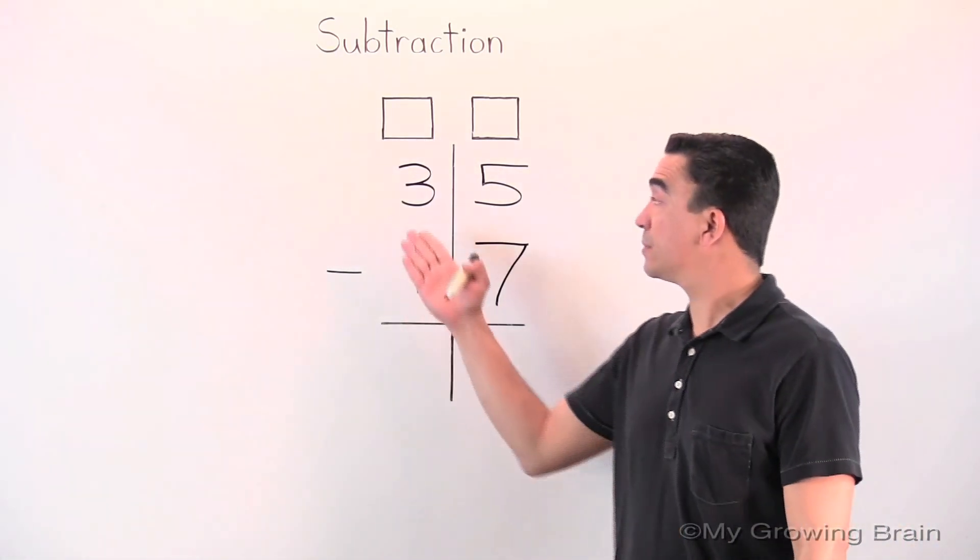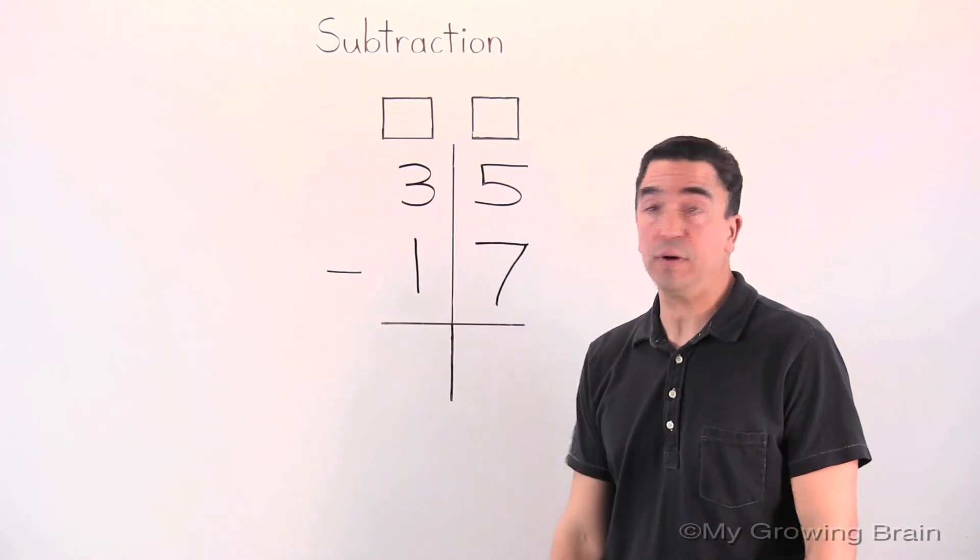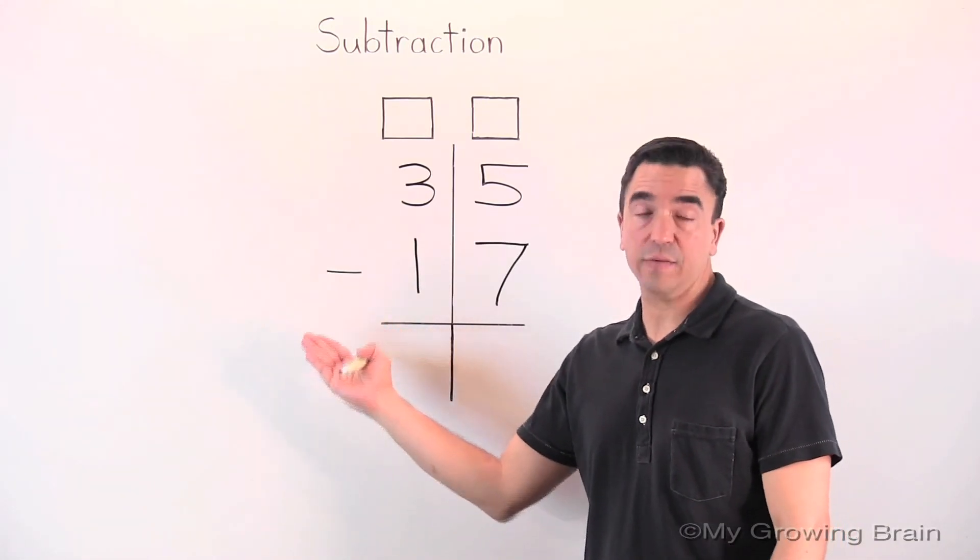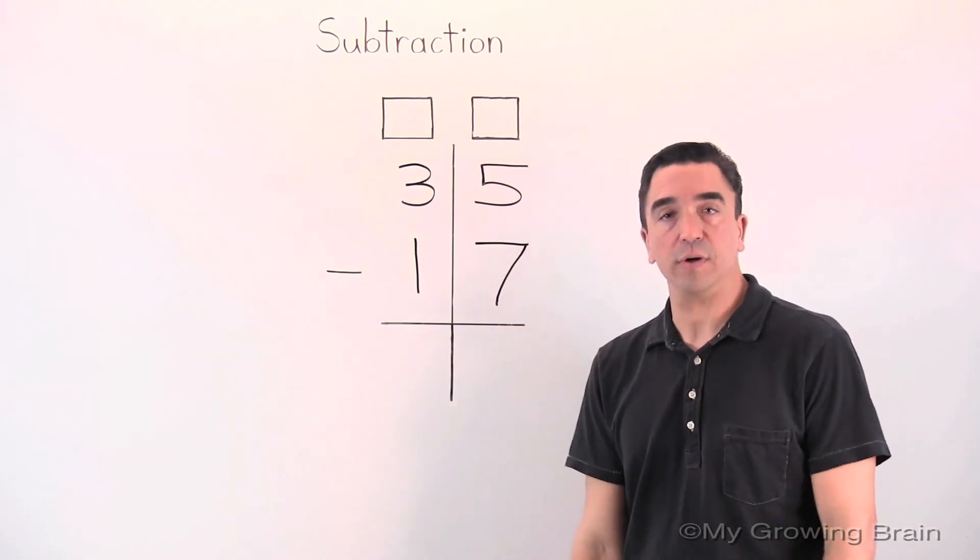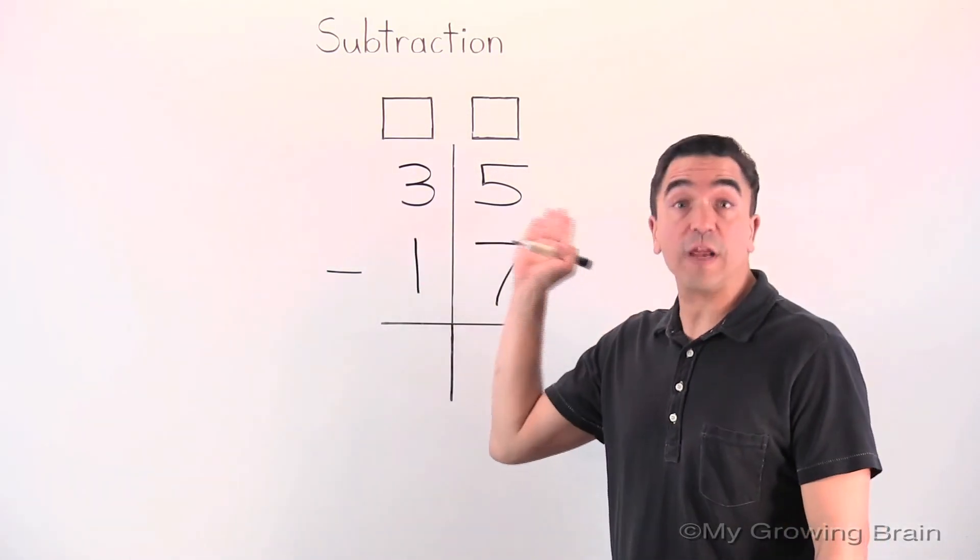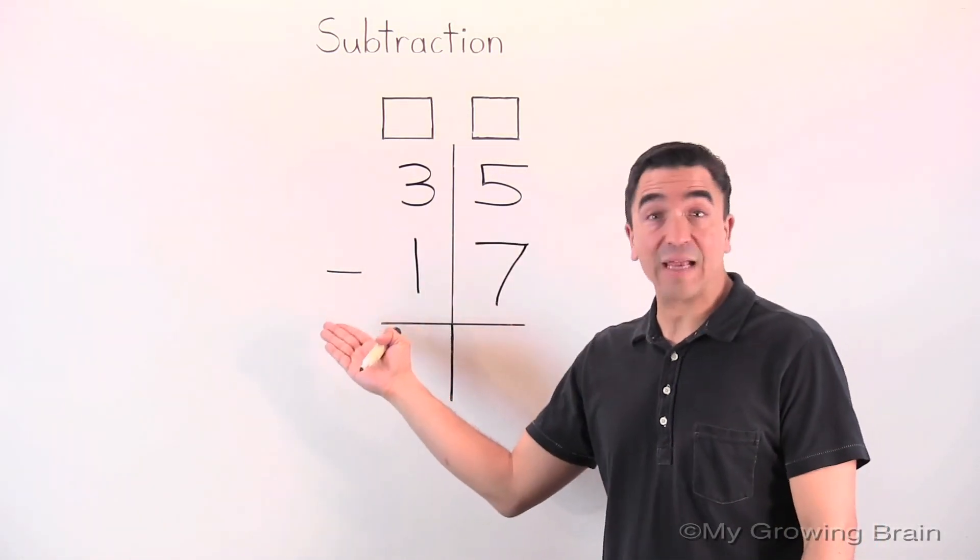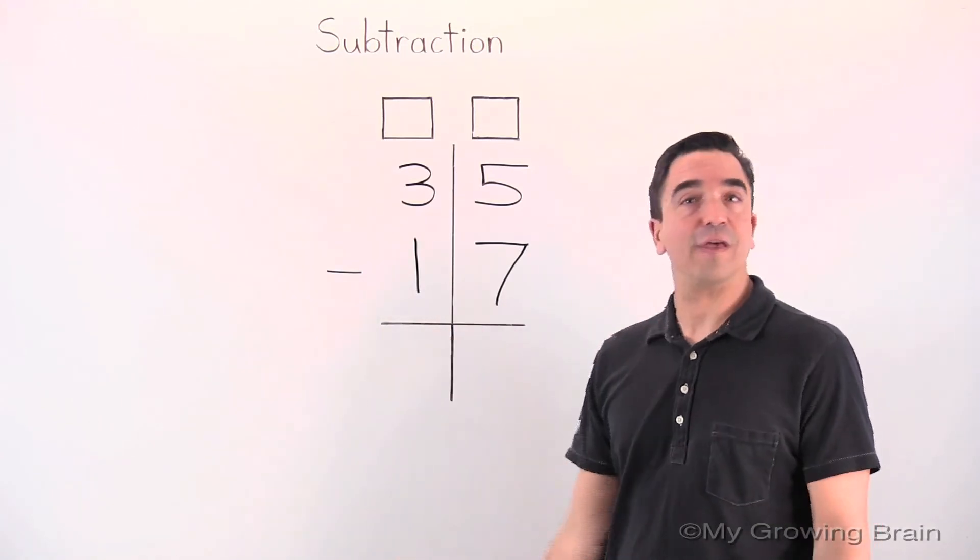Here's our problem. A two-digit number subtract or minus a two-digit number. 35 minus 17.